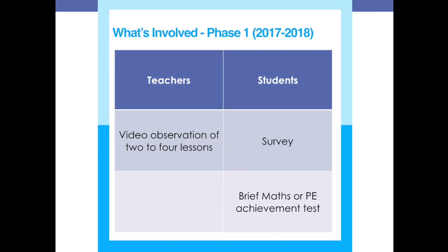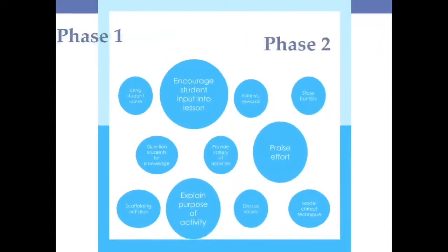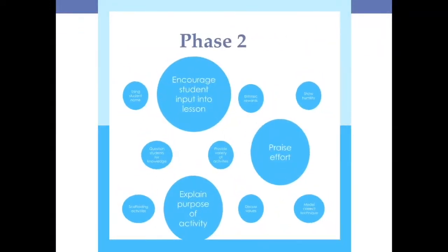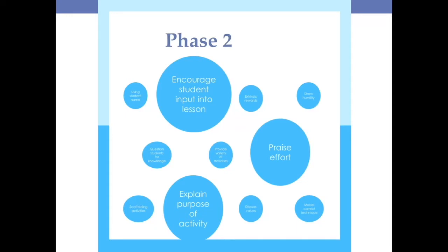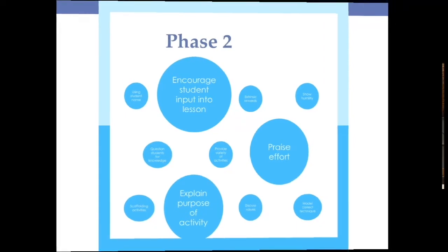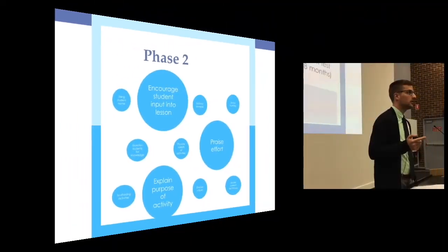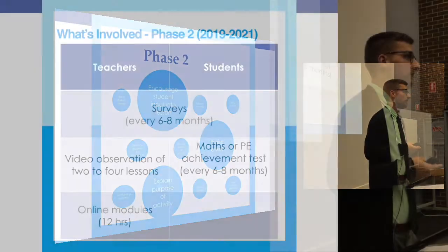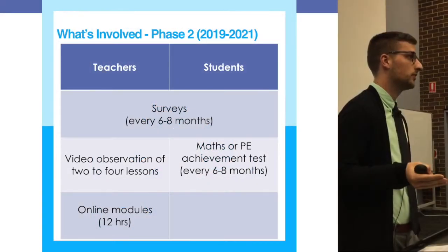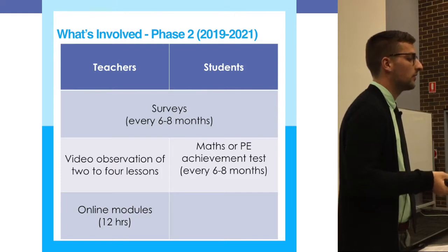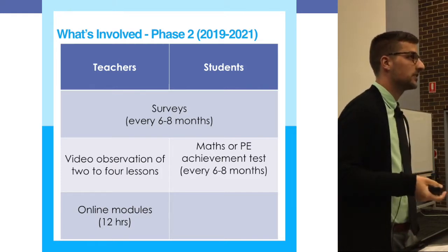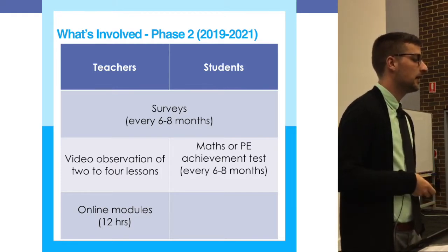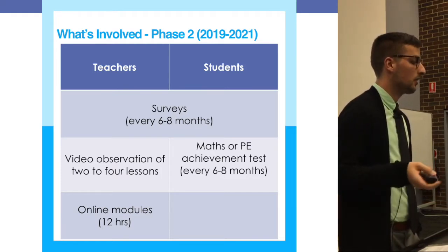In phase two, it's more or less the same as phase one, but this is where the online intervention kicks in for teachers. The great thing about the intervention being online is that there is no face-to-face contact. Teachers will have three school terms to complete roughly 12 hours of online modules, so they can do it at their own pace and in their own time.